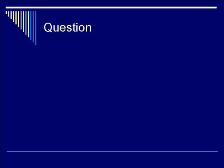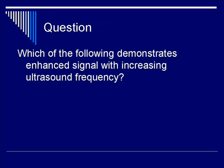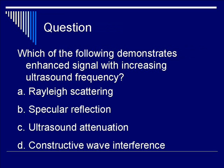Let's do a question to test our knowledge of the various types of scattering mechanisms. Which of the following demonstrates an enhanced signal with increasing ultrasound frequency? Is it A, Rayleigh scattering; B, specular reflection; C, ultrasound attenuation; or D, constructive wave interference?